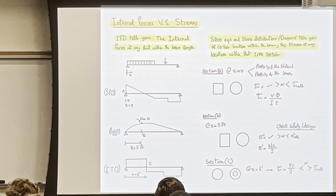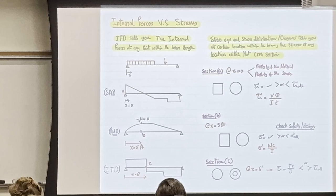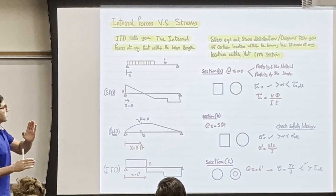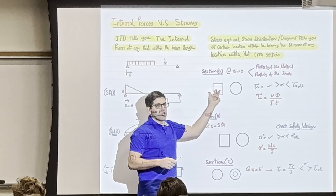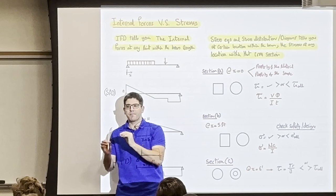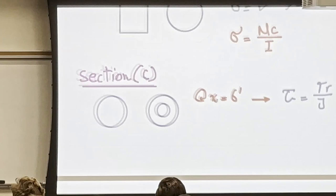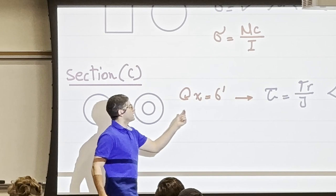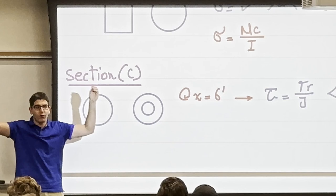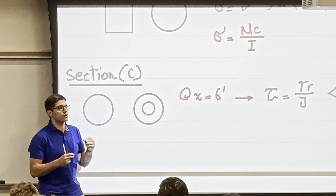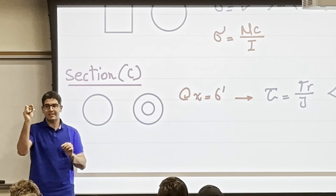To summarize: internal force diagrams cover the whole beam length, while stresses are computed for a certain point within the beam length. Within that cross-section at that point — for example a rectangle — we can determine the stress at any distance within it. Just as with shear stress due to torsion, τ = TR/J, where R is a radial distance within the cross-section, we can describe the stress distribution within that cross-section at a specific location along the beam.